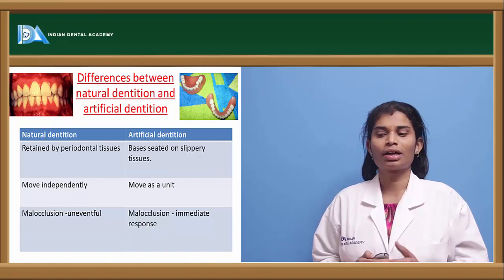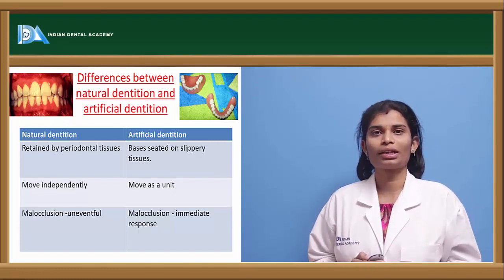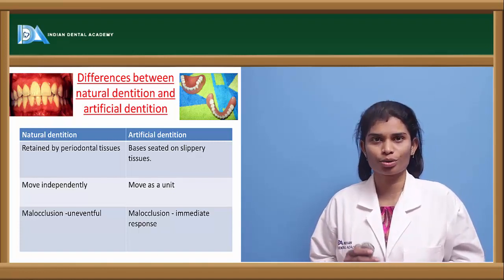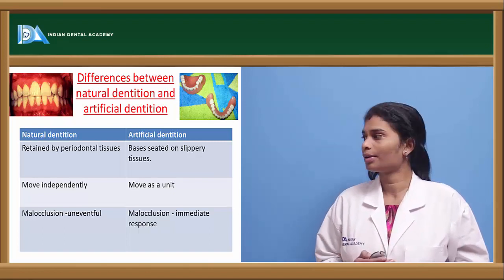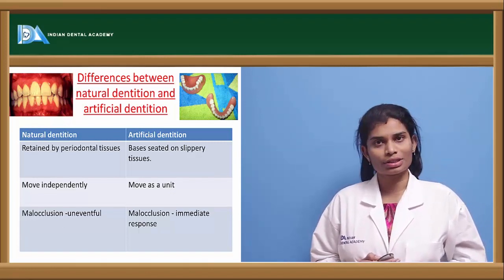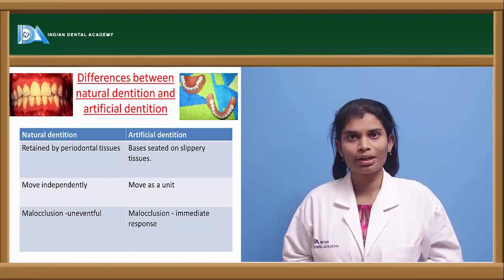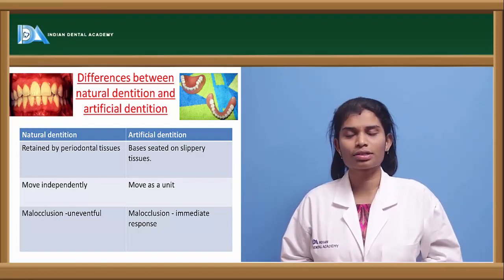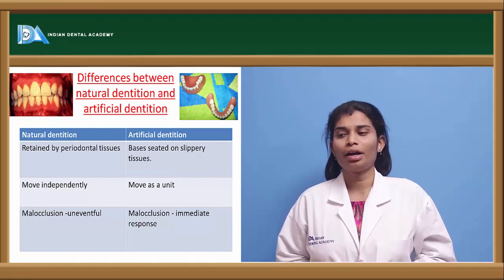In artificial dentition, consider a denture: all the teeth are fixed in a single denture base, so they cannot act independently. Regarding malocclusion, just in case there is malocclusion in natural teeth, that goes uneventful — it doesn't pose any problems.